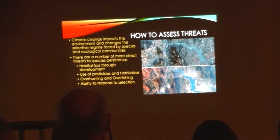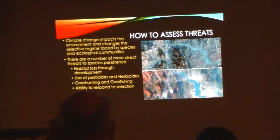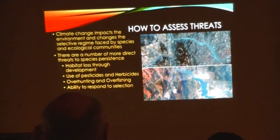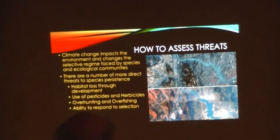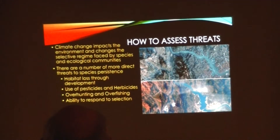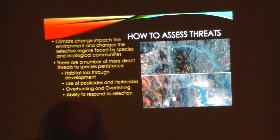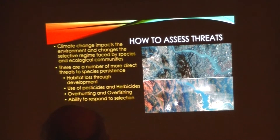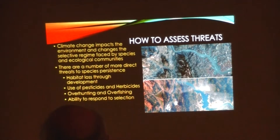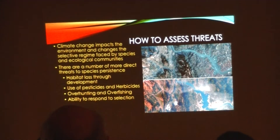The major one is probably habitat loss, which occurs as humans develop or clear out particular environments. Another major one is the use of pesticides and herbicides, which people suspect may be one of the factors involved in the decline in insects that's occurring worldwide. You can have over-hunting or over-fishing of a particular species, which can lead to extinctions, certainly on a local population basis.